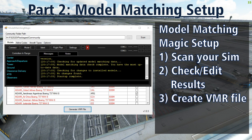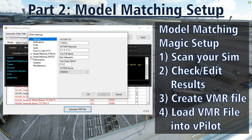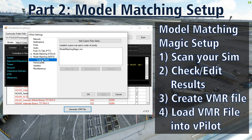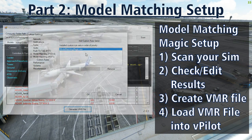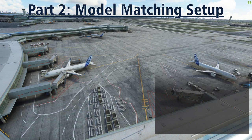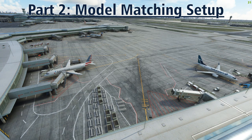The last and final step is to load this VMR file into your client. Run vPilot, open settings, and then look under Model Matching MSFS Custom Rules. You can add multiple different custom rule sets if you wish and vPilot will read them in order. For us, just load the VMR file you just created. And now, voila! Whenever you connect to the network, you will see all the beautiful models instead of generic white and green twin jets.